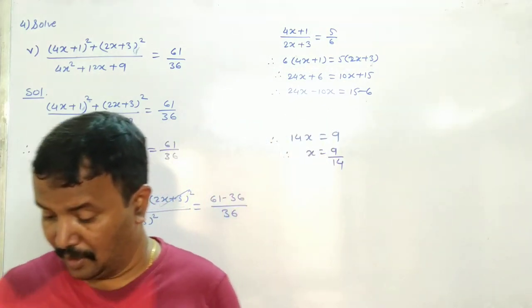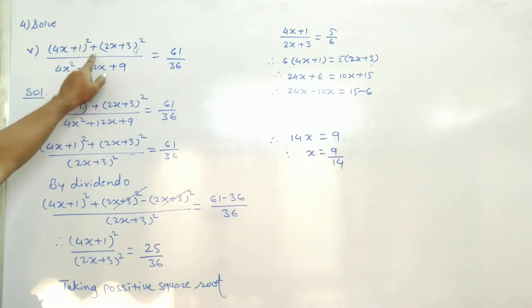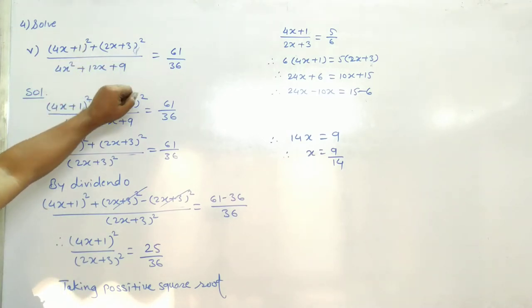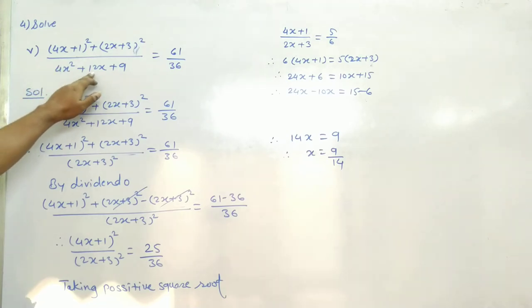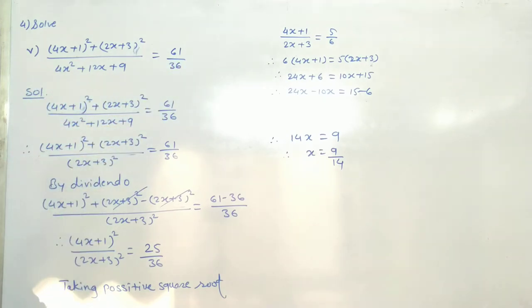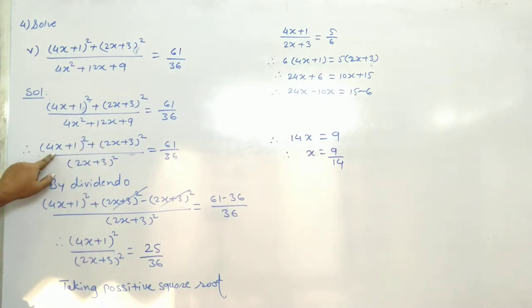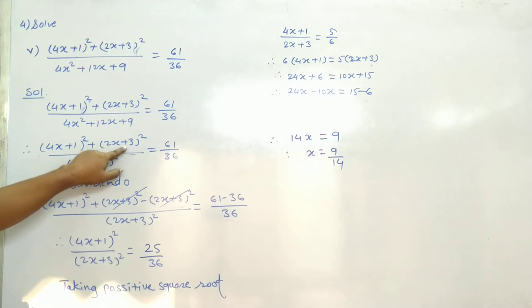See, now fifth sum: (4x+1)² + (2x+3)² divided by (4x+1)(2x+3) is the whole bracket squared, equal to 61 upon 36. Question: (4x+1)² plus (2x+3)².